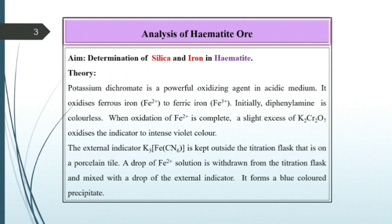The external indicator K3Fe(CN)6 is kept outside the titration flask on a porcelain tile. A drop of Fe2+ solution is withdrawn from the titration flask and mixed with a drop of the external indicator. It forms a blue colored precipitate.